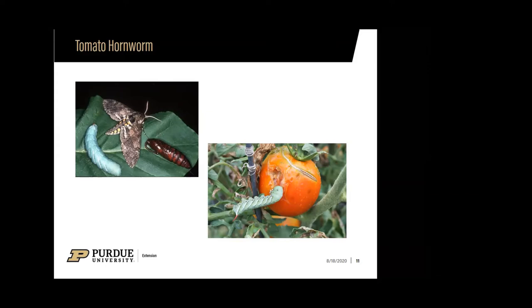I went on a family vacation towards the end of July, and my sister — who doesn't garden — was keeping an eye on things. I came back and asked what happened to my tomatoes. She said she watered them, but she's not familiar with gardening. What had happened was I had a couple of tomato hornworms, and in a matter of a couple of days several, if not all, of my plants were completely devastated.